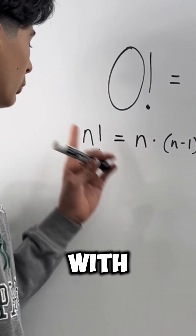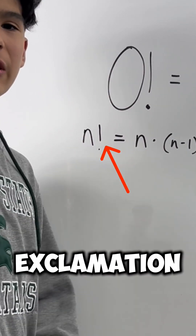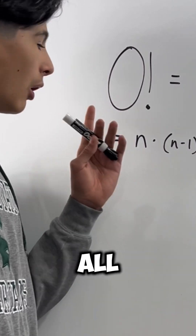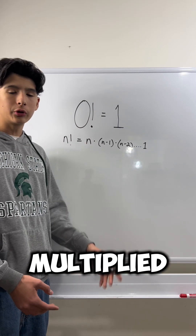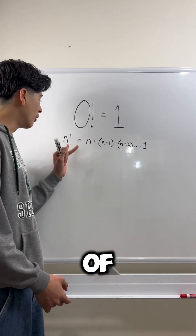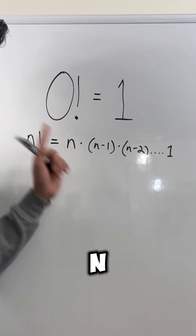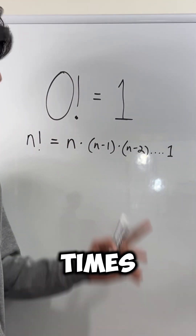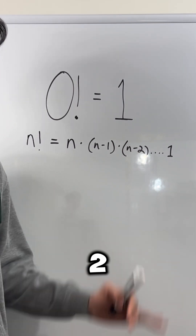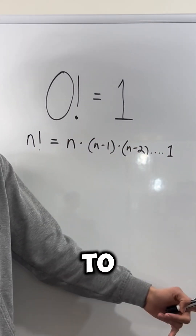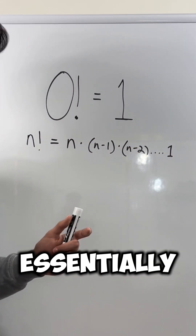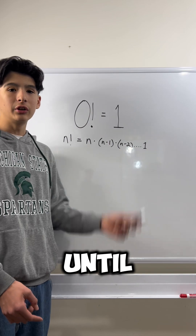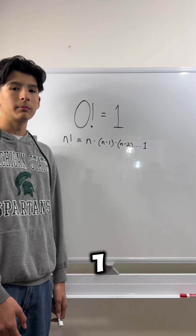A factorial is written with an exclamation mark, and it represents all the numbers multiplied of n. So, n times n minus 1 times n minus 2, all the way down to 1. You're essentially multiplying every single number before n until you reach 1.